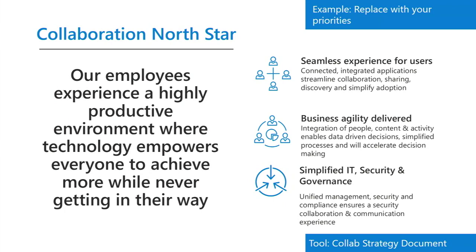One thing we also want is a north star — what do we want to work towards? An example: 'Our employees experience a highly productive environment where technology empowers everyone to achieve more while never getting in their way.' What does this mean? Three measurable results: a seamless experience for users, delivery on business agility, and simplified IT security and governance. This could be one of your north stars to deliver to your management team — this is why we're using Teams, this is how we measure our success.